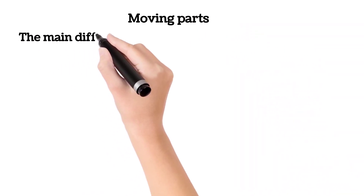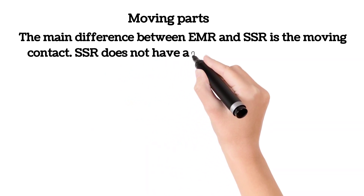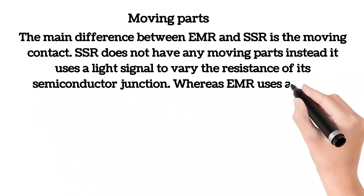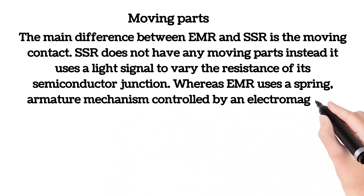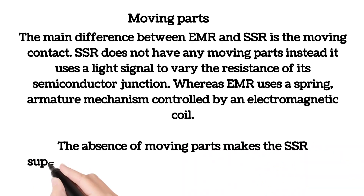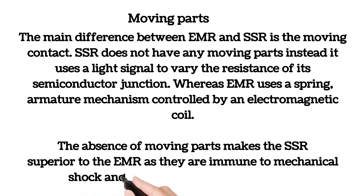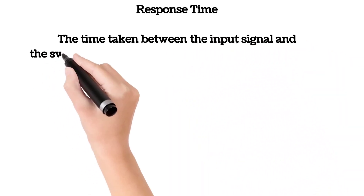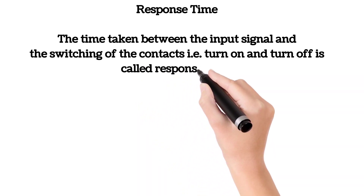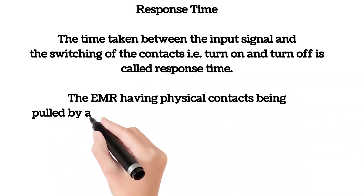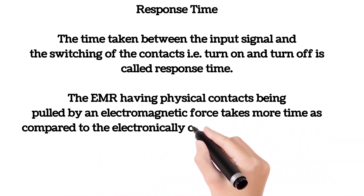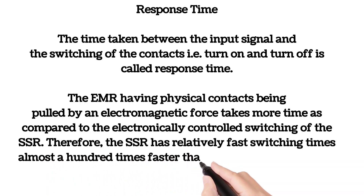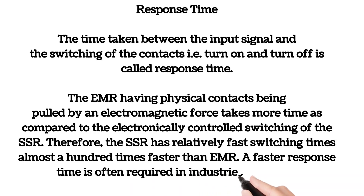Moving parts: The main difference between EMR and SSR is the moving contact. SSR does not have any moving parts; instead, it uses a light signal to vary the resistance of its semiconductor junction. EMR uses a spring-armature mechanism controlled by an electromagnetic coil. The absence of moving parts makes the SSR superior to the EMR as they are immune to mechanical shock and vibrations. Response time: The time taken between the input signal and the switching of the contacts (turn on and turn off) is called response time. The EMR, having physical contacts pulled by electromagnetic force, takes more time compared to the electronically controlled switching of the SSR. Therefore, the SSR has relatively fast switching times, almost 100 times faster than EMR. A faster response time is often required in industries for better performance.